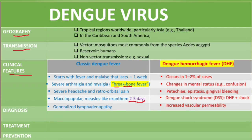Another complication associated with dengue hemorrhagic fever is dengue shock syndrome, which is a combination of dengue hemorrhagic fever plus shock. Again, serotype 2 is the one associated with dengue hemorrhagic fever in cases of repeated infection.